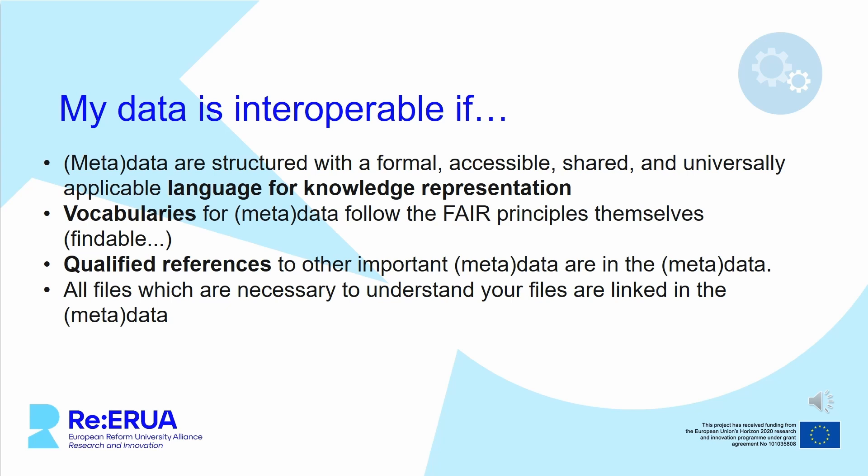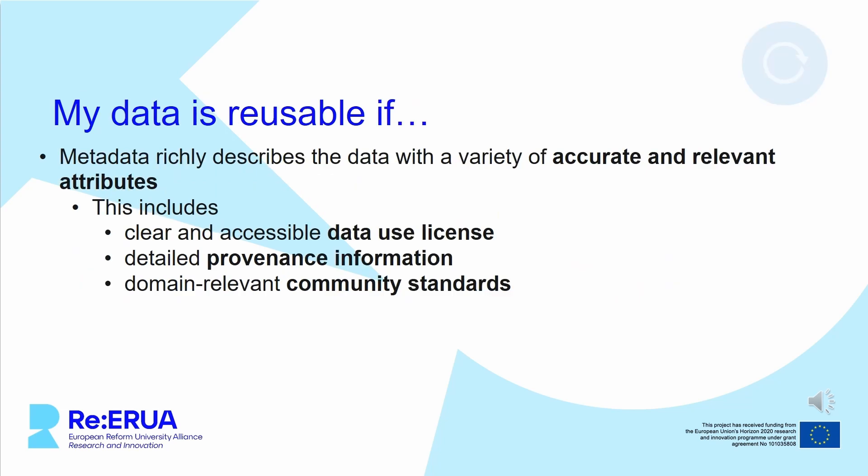You can, for example, link to previous versions of the dataset or other files which are needed to interpret the data. Let's move on to the last point of the FAIR principles: Reusability. To achieve this you need data richly described with a variety of accurate and relevant attributes. This includes a clear and accessible data usage license. The Creative Commons licenses are a good solution for many cases and are used as a quasi-standard in the scientific community. You can learn more about these licenses in our module on legal aspects of open science.